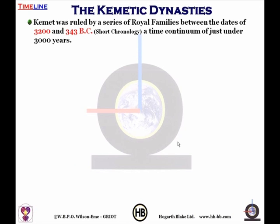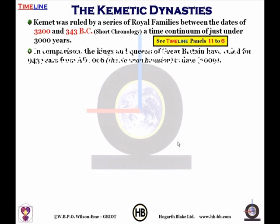Kemet was ruled by a series of royal families between the dates of 3,200 and 343 BC — that's on the short chronology. It's a time continuum of just under 3,000 years, and that's just the dynastic period — timeline panels 11 through 6. In comparison, the kings and queens of Great Britain have ruled for 943 years, from AD 1066, the Norman invasion, to date.